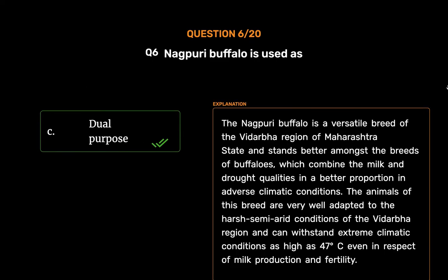The Nagpuri buffalo is a versatile breed of the Vidarbha region of Maharashtra state and stands better amongst the breeds of buffaloes, which combine the milk and drought qualities in a better proportion in adverse climatic conditions. The animals of this breed are very well adapted to the harsh semi-arid conditions of the Vidarbha region and can withstand extreme climatic conditions as high as 47 degrees Celsius, even in respect of milk production and fertility.